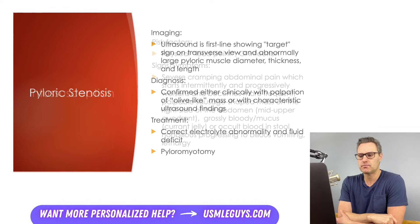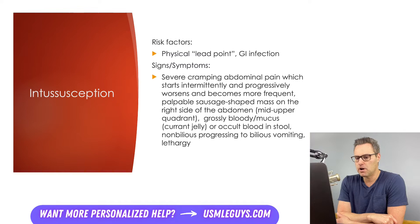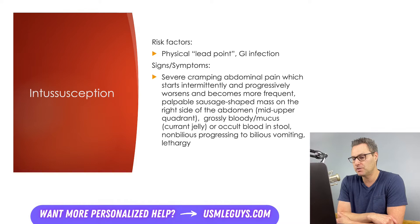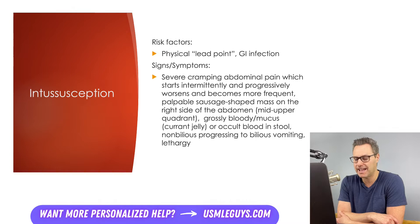Next is intussusception, another highly tested condition. This occurs when part of the intestine moves into an adjacent segment of intestine — often referred to as telescoping, describing how part of the intestine slides into itself, like a telescope collapsing down. In children, intussusception typically occurs between 6 and 36 months of age. While the majority of cases are idiopathic, a physical lead point can cause intussusception, where peristalsis pushes a physical deformity — such as tumors, Meckel's diverticulum, or polyps — into the distal segment of the intestine.